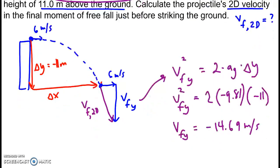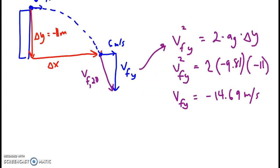So now I can use the Pythagorean theorem to calculate the final 2D velocity. I do this squared plus this squared equals this squared.